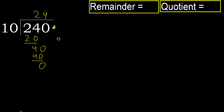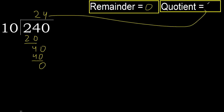That is not a number, therefore finish it. Subtract. Okay. 240 divided by 10 is 24.